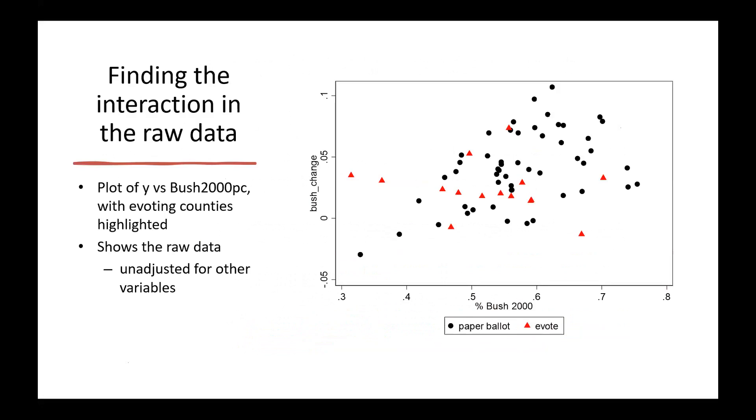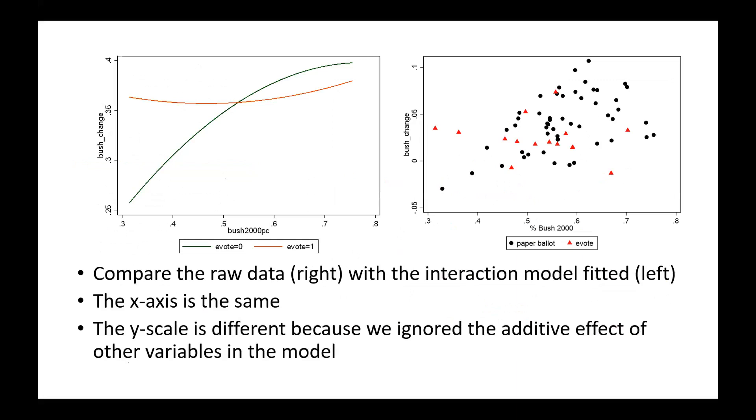Now we're going to look at the raw data. The raw data do not adjust for other variables. So to the extent that there are other variables that interfere with interpretation, we might see something that's not exactly the same as we saw in what the model thinks. But maybe we get lucky that we can make out something. I'm highlighting the 15 counties that are e-voting. And what you can see here, it is gorgeous. You see sort of a straight zero line slope here going across red. And then you see the black points there increasing. So you pretty much see the exact same picture we had seen before.